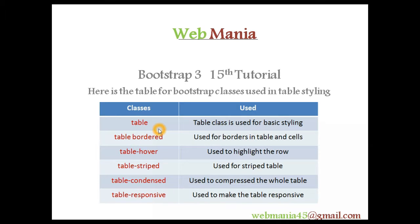The first class is the table class, used for basic styling of the table. The next one is table-bordered, used to apply borders to table cells. Then table-hover, used to highlight a row on hover. Table-striped is used to stripe the table — it turns the table into a zebra-striped form. The table-condensed class is used to compress the whole table.